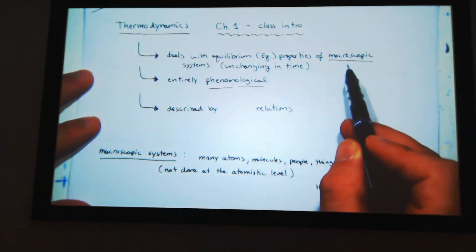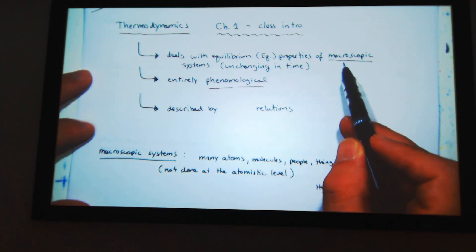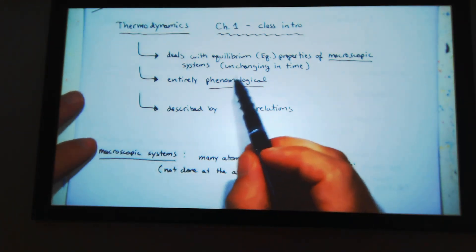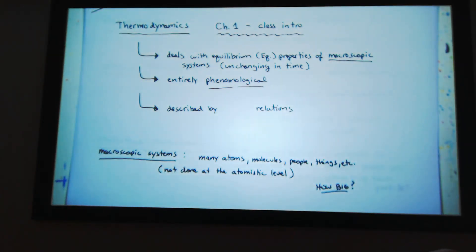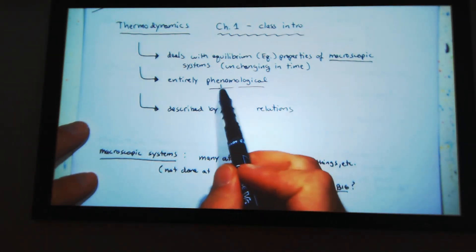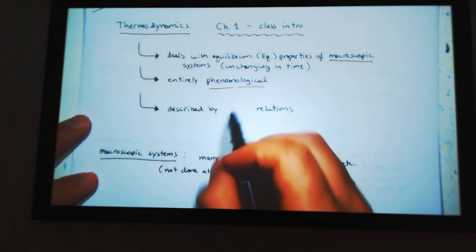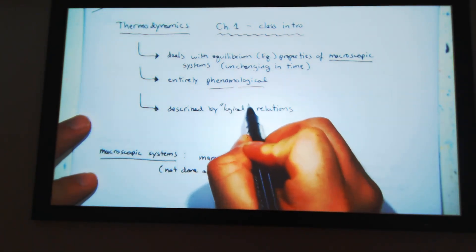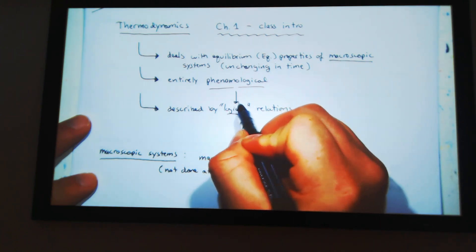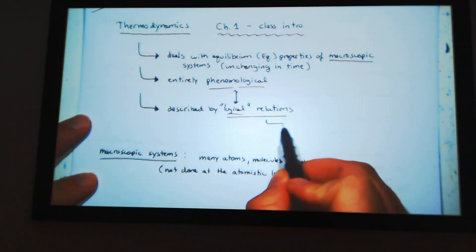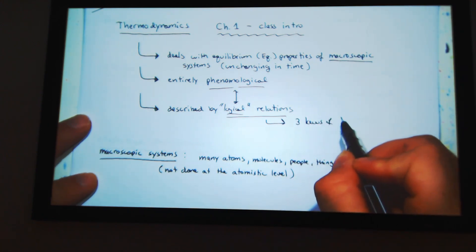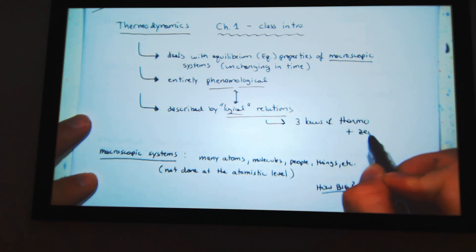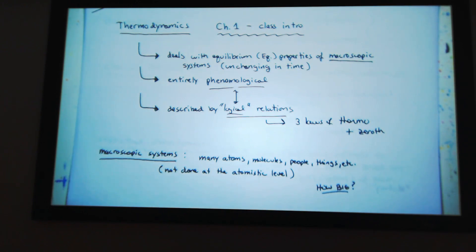So it deals with equilibrium properties of macroscopic systems, so many particles, 10 to the 23, unchanging in time. So equilibrium means the temperature and pressure are unchanging in time. It's entirely phenomenological and described by logical relations. And these logical relations are the three laws of thermo plus the zeroth.